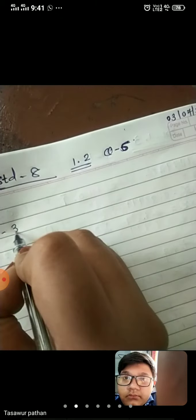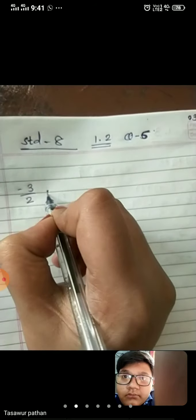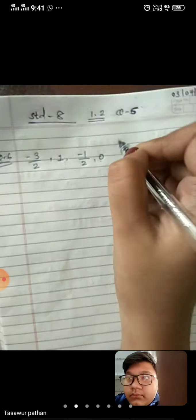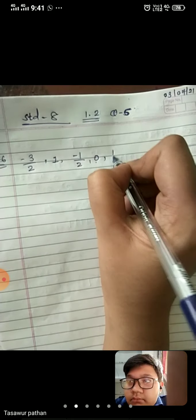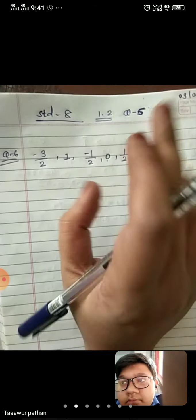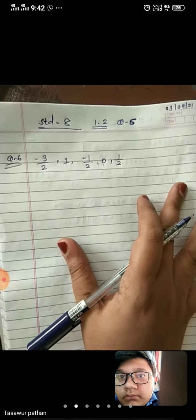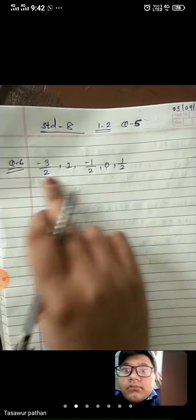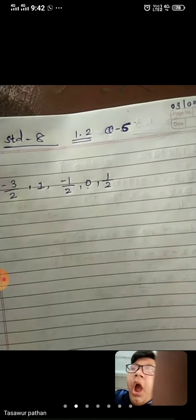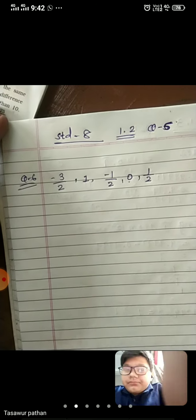Suppose if you want to write question 6, you have to choose only 5 numbers. For example: minus 3 upon 2, then 1 — 1 is also greater than minus 2 — minus 1 upon 2, then 0 is also greater than minus 2, then 1 upon 2. Here 5 numbers are over. We have to choose only 5 rational numbers which are greater than minus 2.